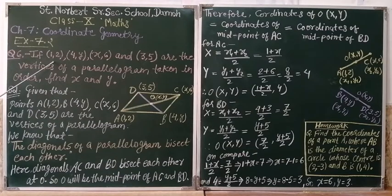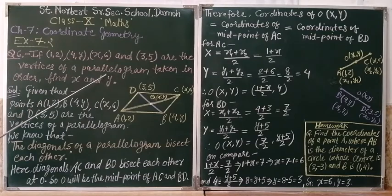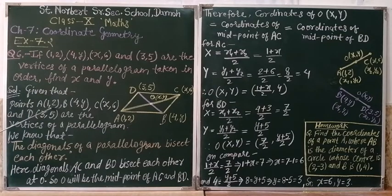If (1, 2), (4, y), (x, 6), and (3, 5) are the vertices of a parallelogram taken in order, find x and y. They have given here points A(1, 2), B(4, y), C(x, 6), and D(3, 5) are the vertices of a parallelogram.